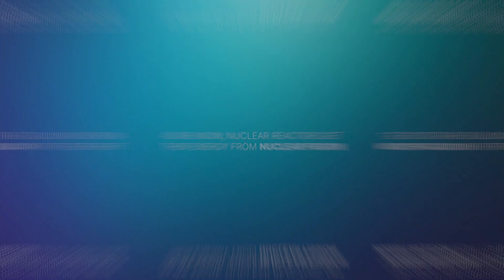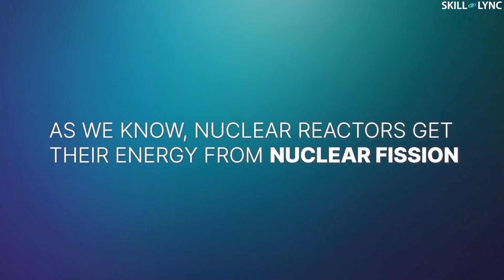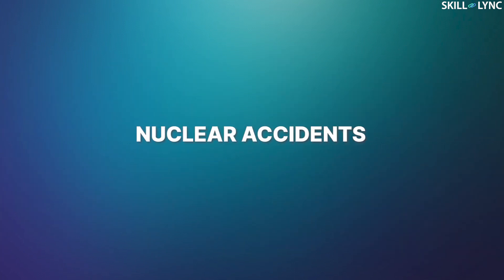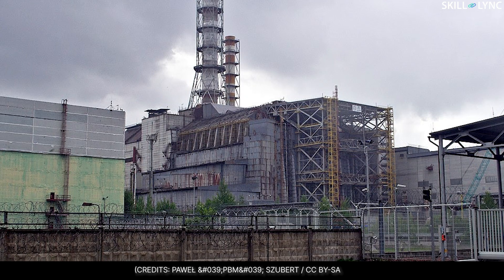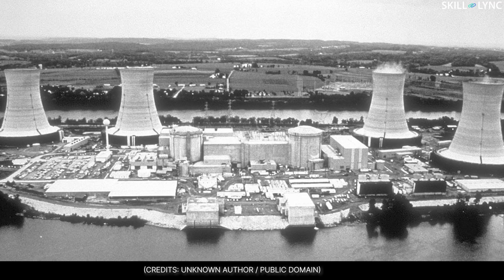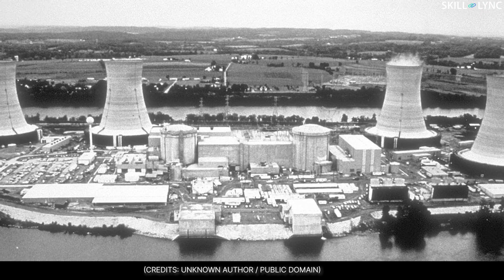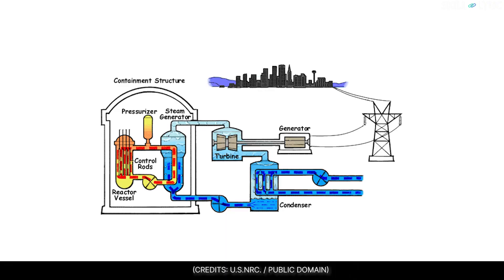Hey guys, welcome back to the channel. As we know, nuclear reactors get their energy from nuclear fission. The fission releases a very large amount of energy. If not controlled, this energy can cause disasters such as the Chernobyl disaster and the Three Mile Island accident. In this video, we will discuss the working of nuclear reactors.